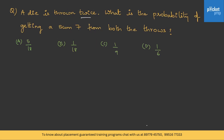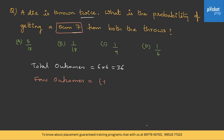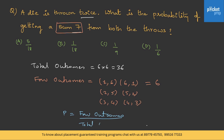Let us do one more for practice. A die is thrown twice. What is the probability of getting a sum of 7 from both throws? The total outcomes remain 36. For favorable outcomes, the sum must be 7: possible pairs are (1,6), (6,1), (2,5), (5,2), (3,4) and (4,3) — so 6 possible outcomes. Probability is favorable outcomes by total outcomes, which is 6 upon 36, that is 1 by 6.